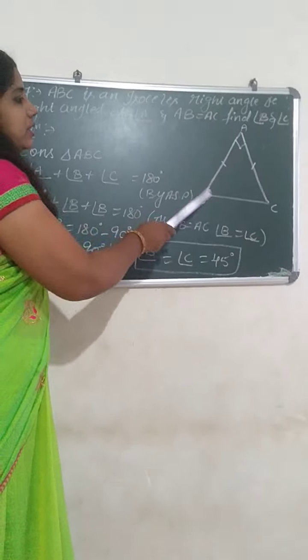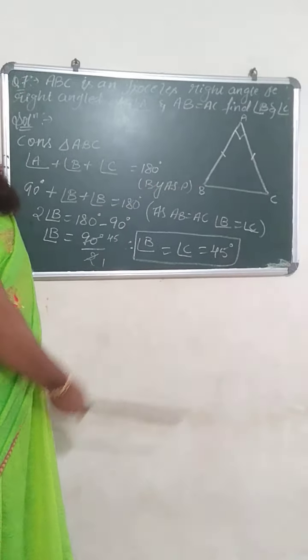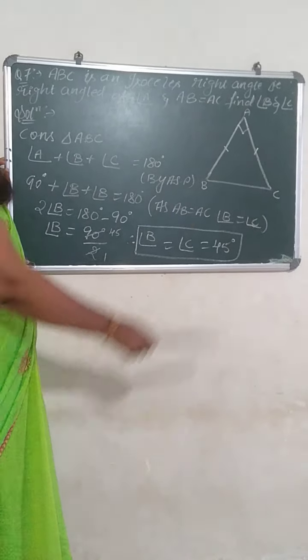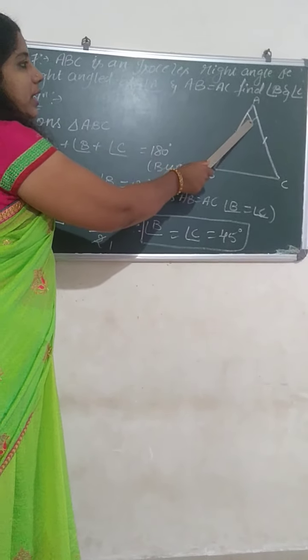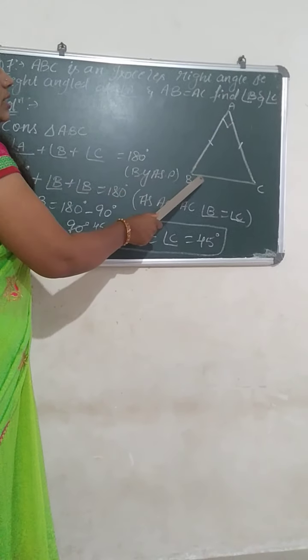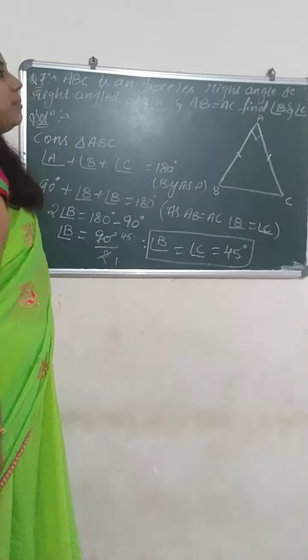Let us move to the sum. In this sum they have given a triangle ABC, right angle at A. It is an isosceles right angle triangle. As we all know, isosceles means two sides are equal. They have given one of the angles as 90 degrees and they have asked me to find out angle B and angle C.